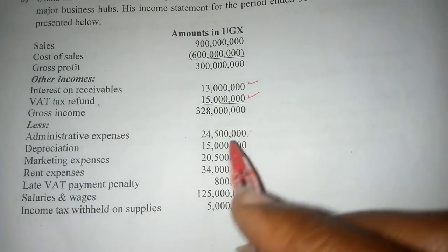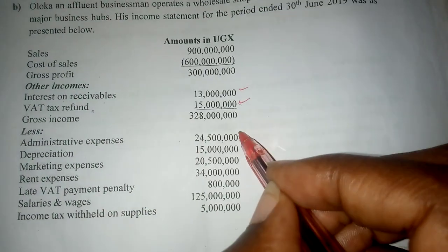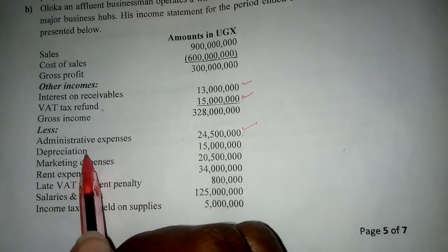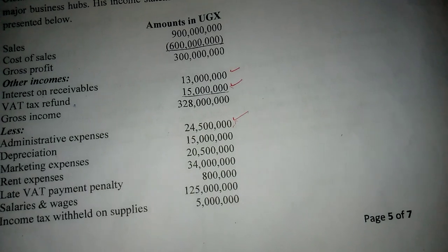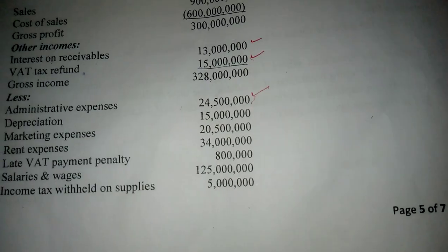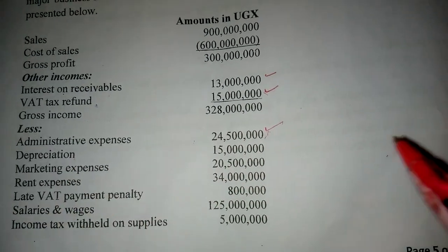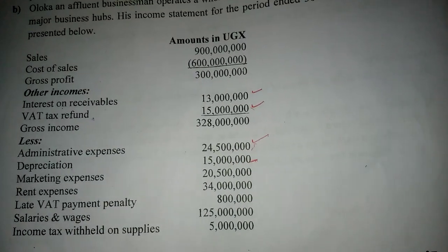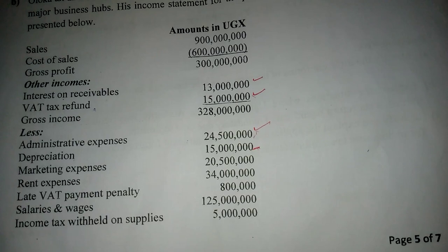Administrative expenses are not taxed and they were subtracted, so we leave them. Depreciation, however, is non-allowable, so it is supposed to be added back. But in the income statement it was subtracted, so we go to our workings and add it back.